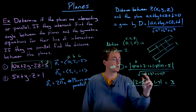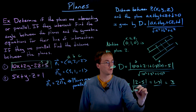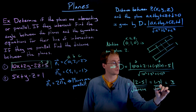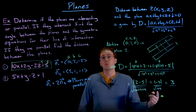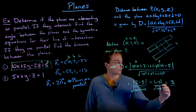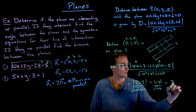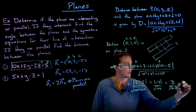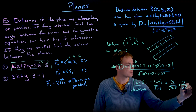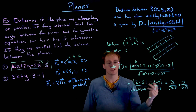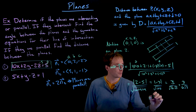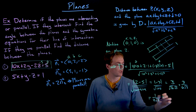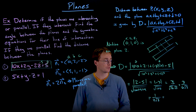Our denominator is the square root of 10 squared plus 2 squared plus negative 2 squared, which is the square root of 100 plus 4 plus 4, or the square root of 108. The square root of 108 is the square root of 36 times the square root of 3, which simplifies to 3 over 6 times the square root of 3, or 1 over 2 times the square root of 3.